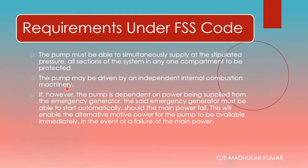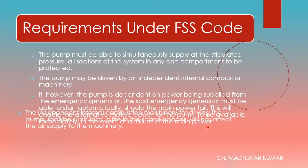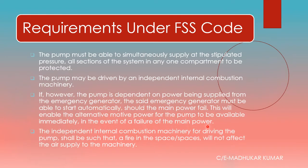If the pump is dependent on power from the emergency generator, that emergency generator must be able to start automatically — as per SOLAS guidelines, within 45 seconds of a power cut. There are two independent power sources: main power supply and emergency power supply. This enables alternative motive power for the pump to be available immediately in case of main power failure.